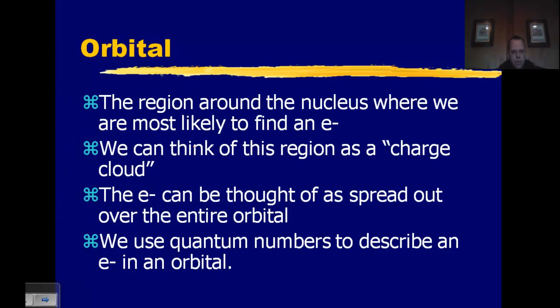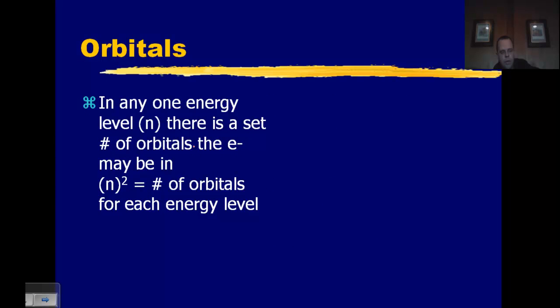So an orbital is thought of as the region around the nucleus where we can expect to find the electron. You can almost think of it as a cloud of negative charge. One of the best explanations, and I know this seems very contrary to our way of understanding the world, is that you can think of the electron being spread out throughout the entire orbital all at the same time. And the quantum numbers give us the shape of that orbital. Now there are two orbitals that we need to know, and we're going to get into the shapes of these orbitals and our electron configurations as we go forward in the course. The key thing to remember, in any energy level, there is a set number of orbitals that the electron may be in, and it's actually the energy level squared.